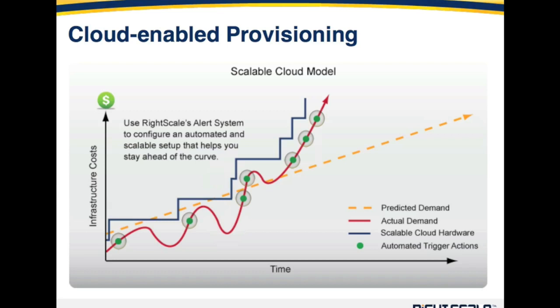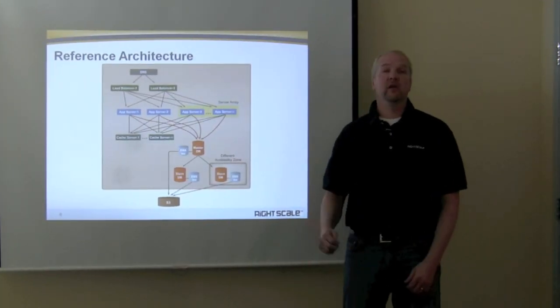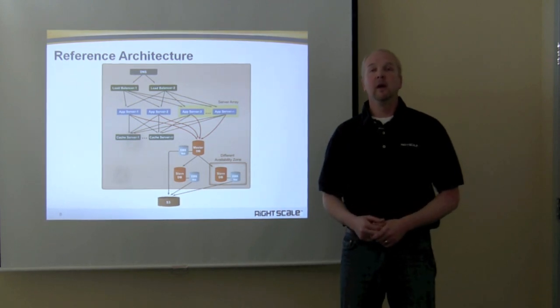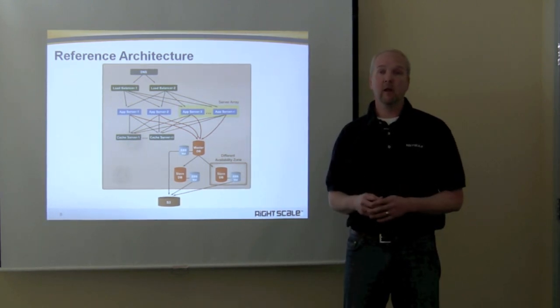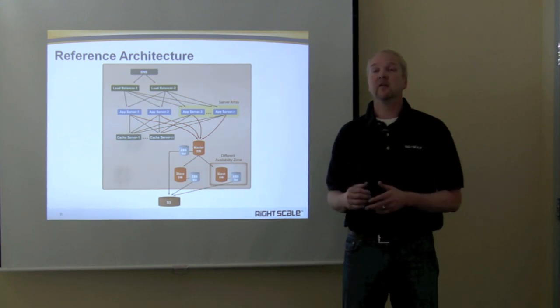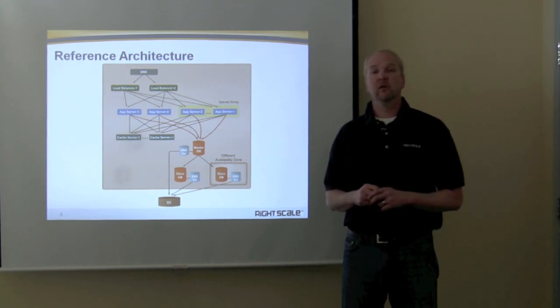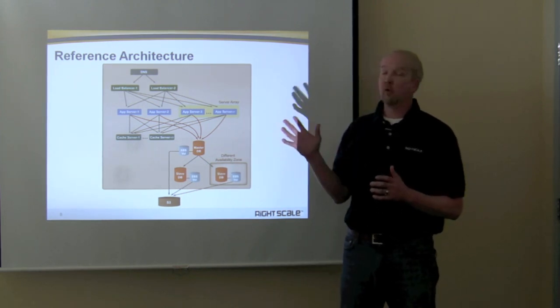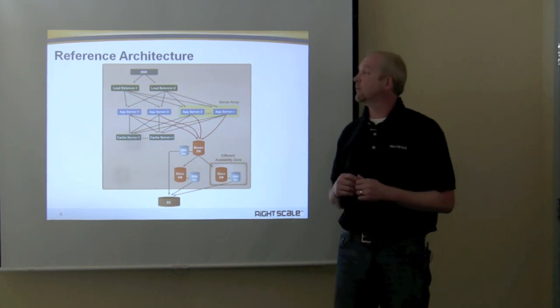The remainder of this video will talk about a reference architecture and some best practices at each tier, with the ultimate goal of implementing what you see in this graph. This is a reference architecture that many of our customers have used in bringing their scalable applications into the cloud. It may look familiar to many who have done scalable application development either in the cloud or in a data center, but there are a few idiosyncrasies and tips and tricks we're going to discuss at each tier.